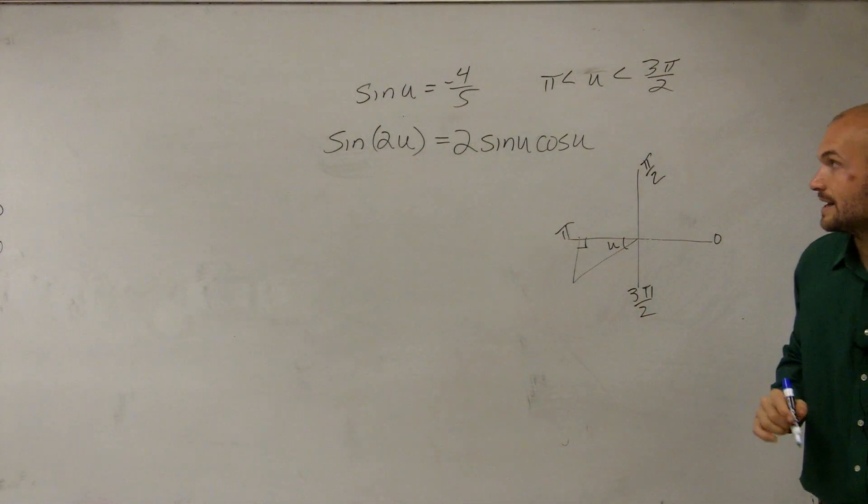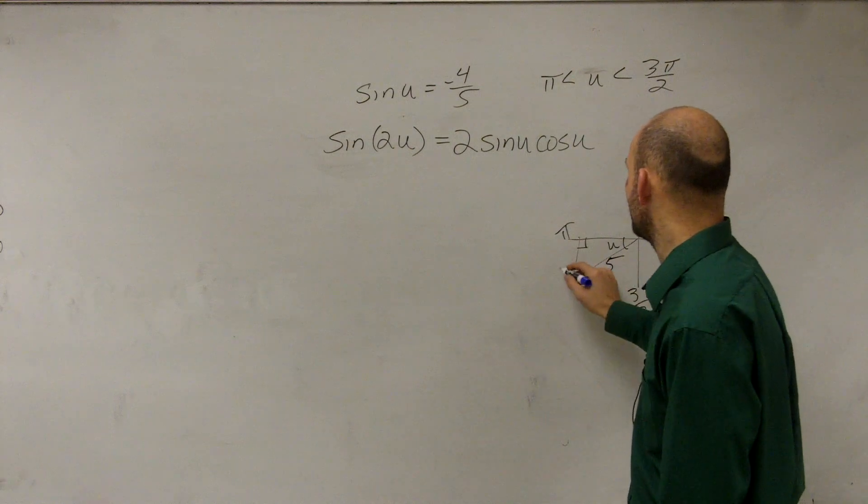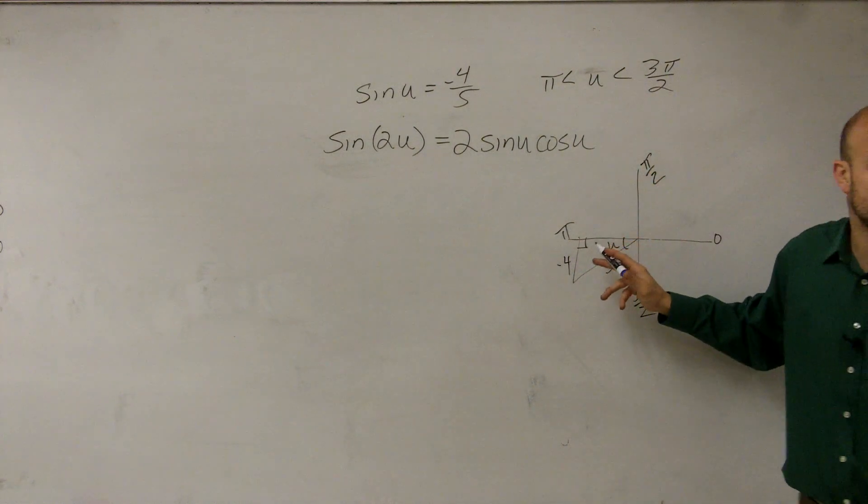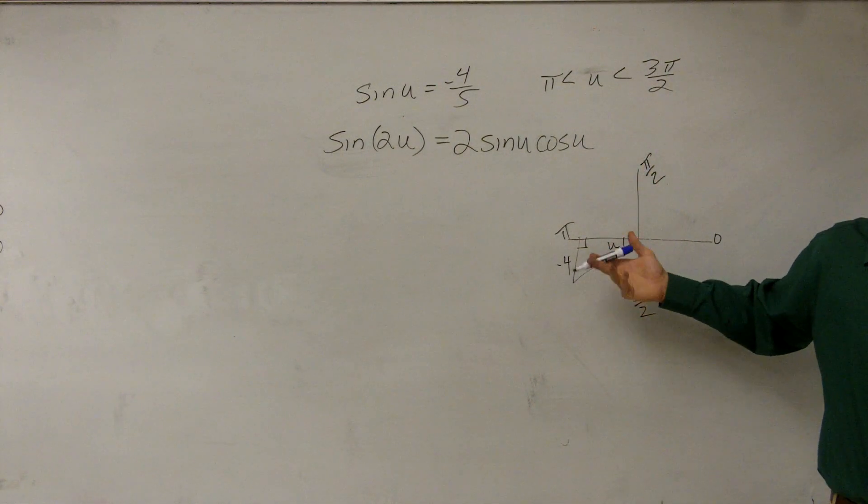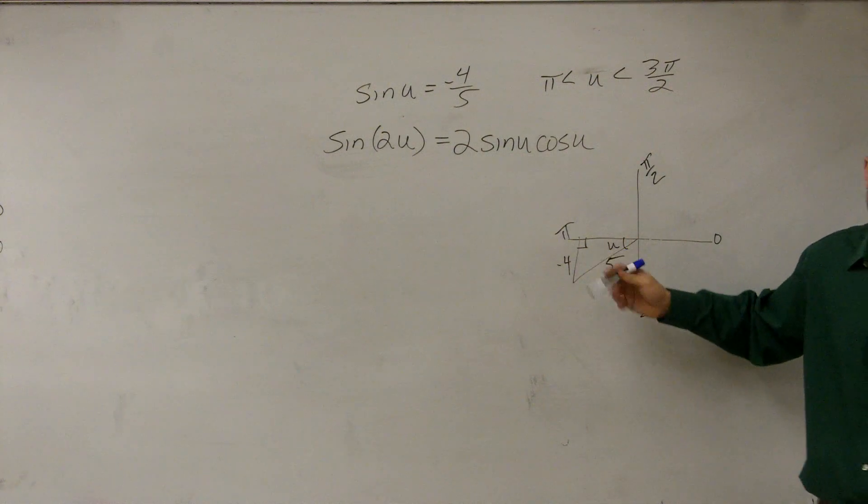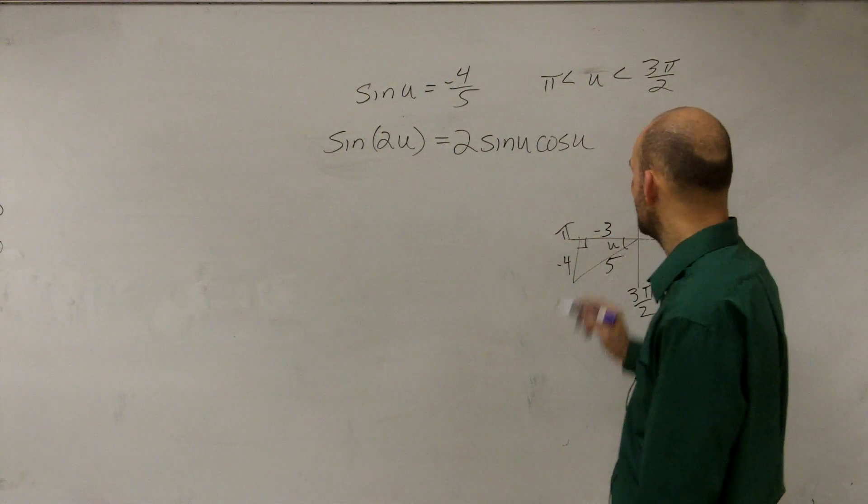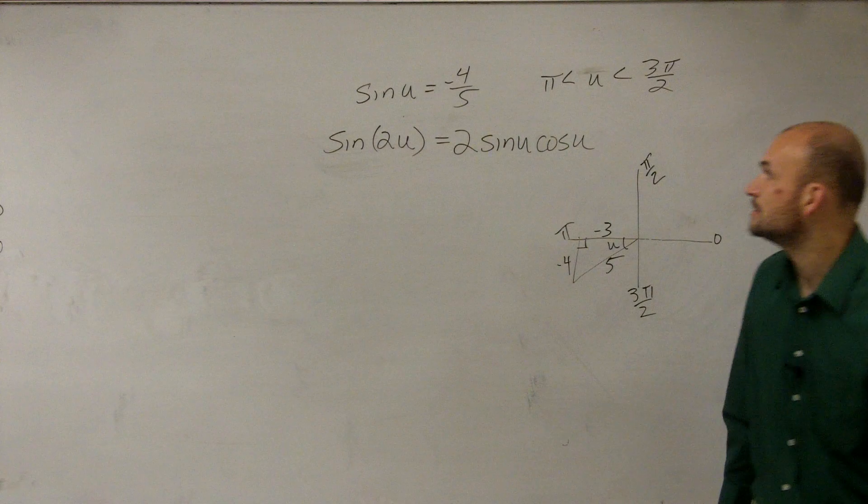So it's going to look like that. Now we already know this is 5, this is negative 4. We know now the x is going to be negative. We just need to determine what it is. Thankfully, we know this is a Pythagorean triple.